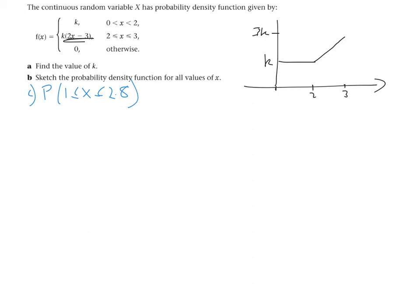Now, to work this out, we know that the total area under the curve is 1. I'm going to split it up into two parts, so I've got shape A and shape B.